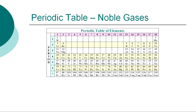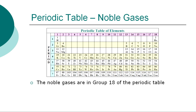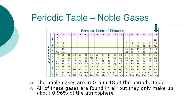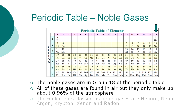The six elements classified as noble gases or inert gases are in group 18 of the periodic table. All of these gases are colorless, found in air, and make up around 0.96% of the atmosphere. The six elements classified as noble gases are helium, neon, argon, krypton, xenon, and radon. They almost never react with other elements and do not readily form compounds.